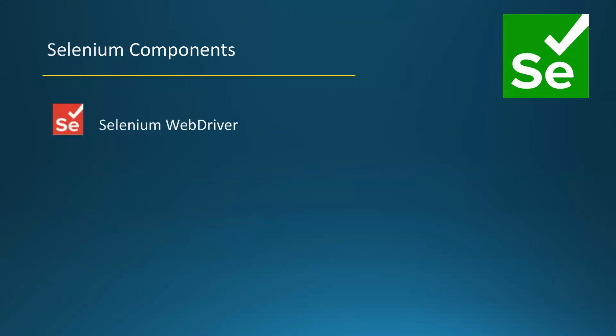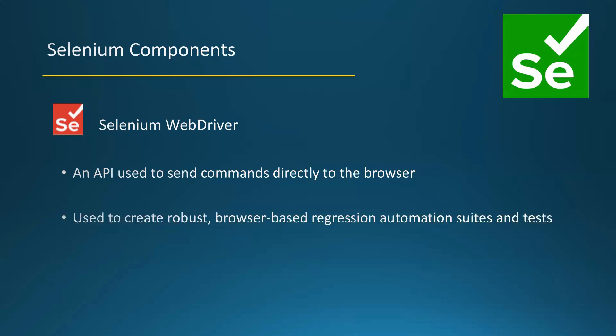The next component is Selenium WebDriver — a very important component. WebDriver is an API which is used to send commands directly to the browser. It is used to create robust and regression automation suites for web browser or web-based applications. We are going to use WebDriver to write Selenium scripts starting from the next video.